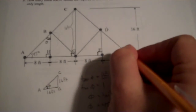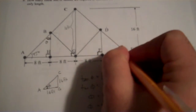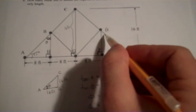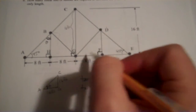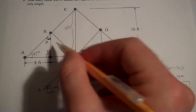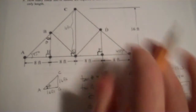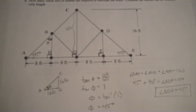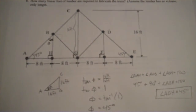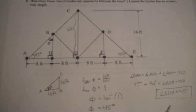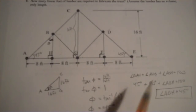And because the truss is symmetric, we also know this angle is 45 degrees, and basically all the corresponding angles throughout the truss. So for part B: how many linear feet of lumber is required to fabricate this truss?